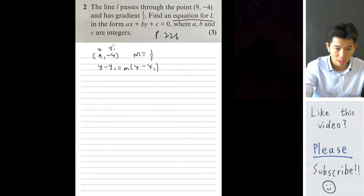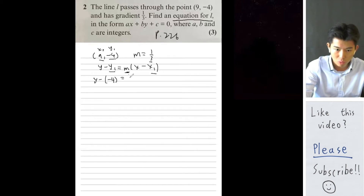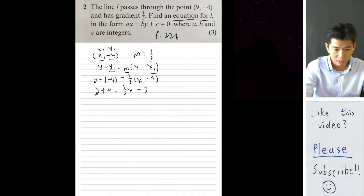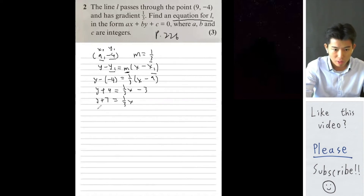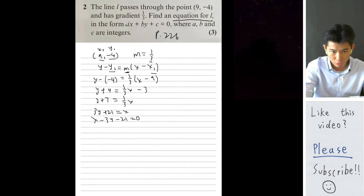Substituting x1 equals 9, y1 equals −4, and m equals 1 over 3: y minus (−4) equals 1 over 3 times (x minus 9), giving y plus 4 equals 1 over 3 x minus 3. Adding 3 to both sides: y plus 7 equals 1 over 3 x. Multiplying through by 3: 3y plus 21 equals x. Rearranging: x minus 3y minus 21 equals 0. So a equals 1, b equals negative 3, and c equals negative 21.